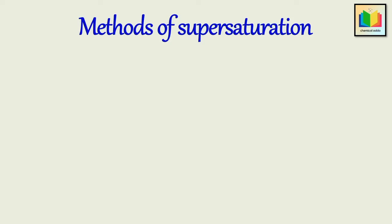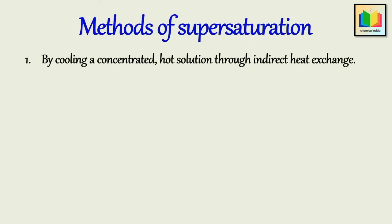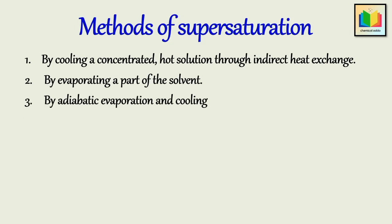The first method is by cooling a concentrated hot solution through indirect heat exchange. The second method is by evaporating a part of the solvent. The third method is by adiabatic evaporation and cooling — that is, by vacuum cooling — which is done by flashing a feed solution adiabatically to a lower temperature and causing crystallization by simultaneous cooling and evaporation of the solvent.